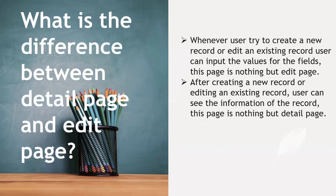What is the difference between the detail page and the edit page? The edit page is what a user sees when creating a new record or editing an existing record — the user inputs values into fields on this page. The detail page is what a user sees after creating or editing a record, where the saved information from the record is displayed.